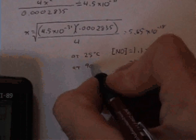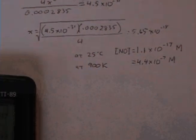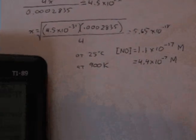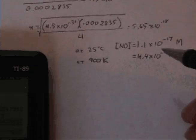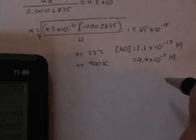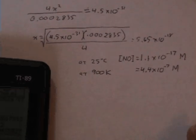Where this is at 25 degrees and this is at 900 Kelvin, or about 627 degrees C.